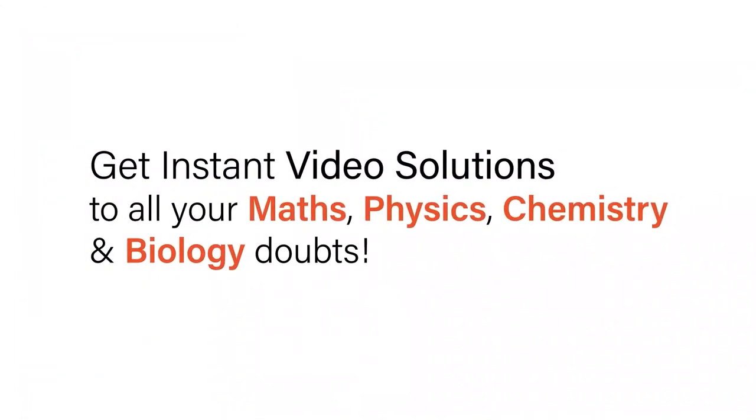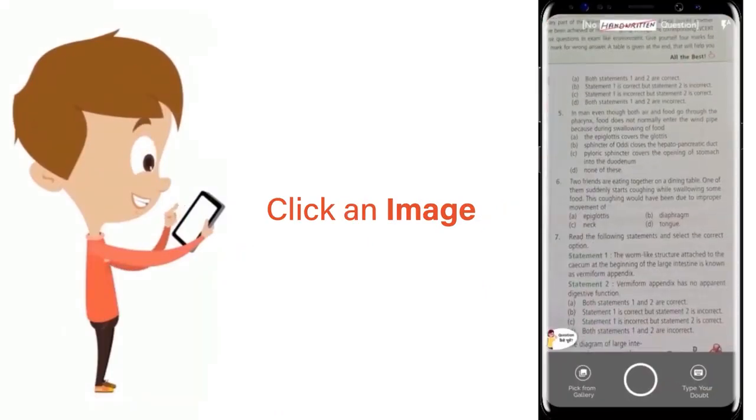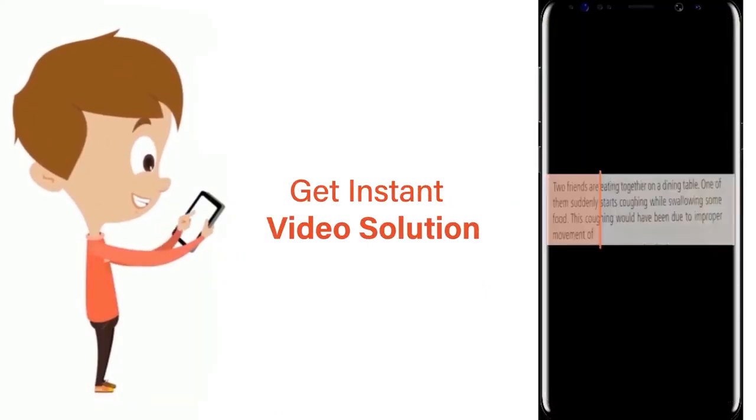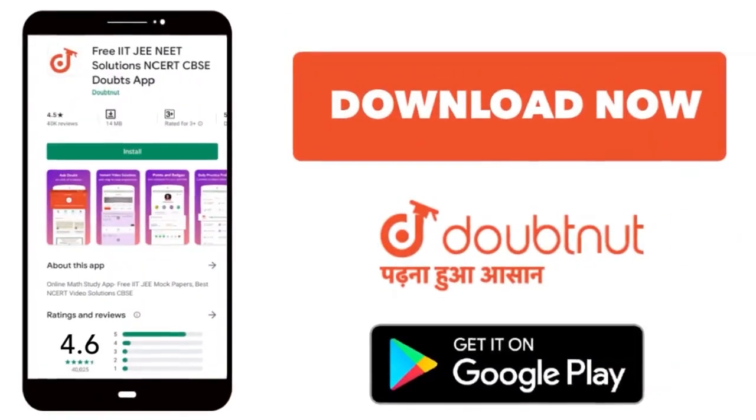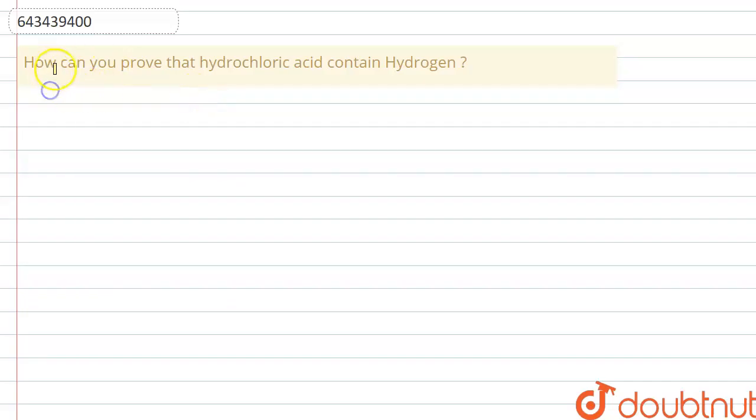With Doubtnet, get instant video solutions to all your maths, physics, chemistry and biology doubts. Just click the image of the question, crop the question, and get instant video solution. Download Doubtnet app today. Hello everyone, the question is how can you prove that hydrochloric acid contains hydrogen?